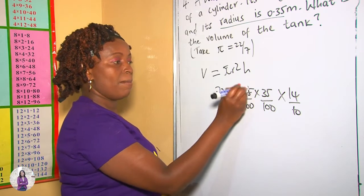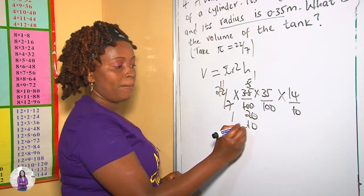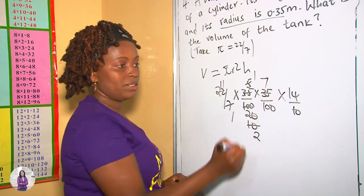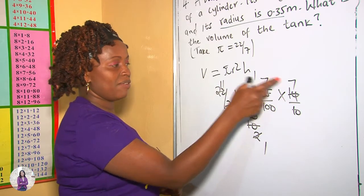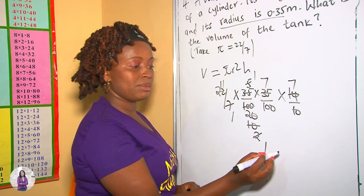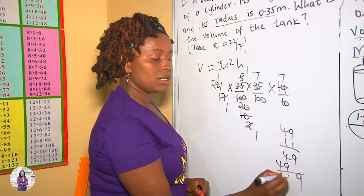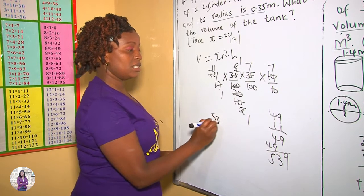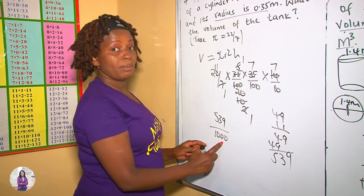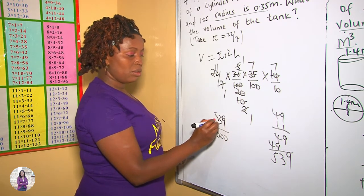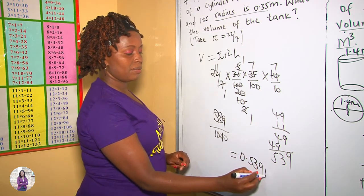Our r is 0.35, which we write as the fraction 35 over 100, times 35 over 100. Multiplied by our height, which is 1.4, written as 14 over 10. Cross-multiplying, 7 into 35 gives 5, and 7 into 14 gives 2, and 5 times 2 gives 10. After further simplification, we get the numerator as 539. Our denominator is 100 times 100 times 10, which is 100,000. Dividing 539 by 1,000, our answer is 0.539 meters cubed.